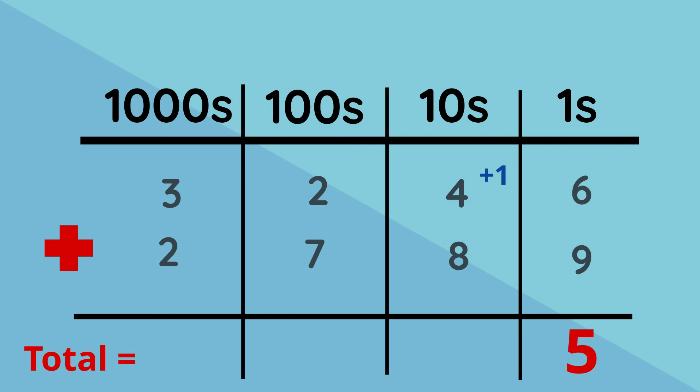In our tens column, we now have four plus eight plus the one we regrouped, which will give us thirteen. Wow, another double digit! So we put our second digit three into the answer space of the column we are adding and our first digit is carried over to the hundreds column.